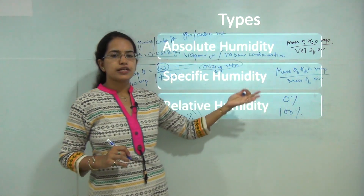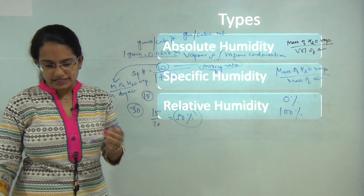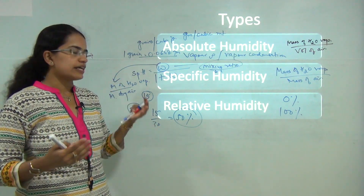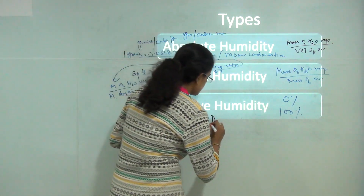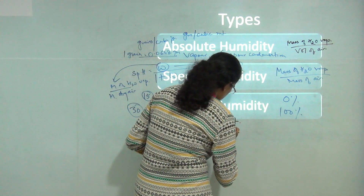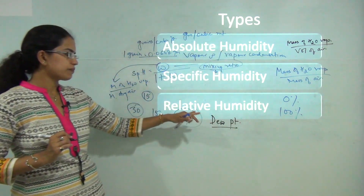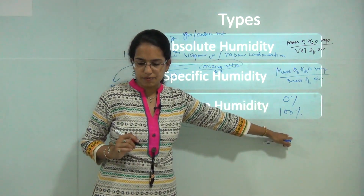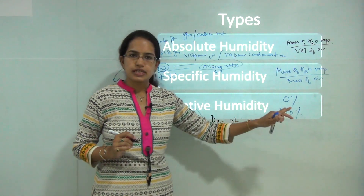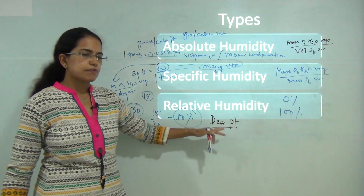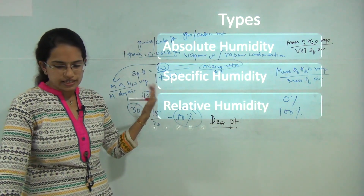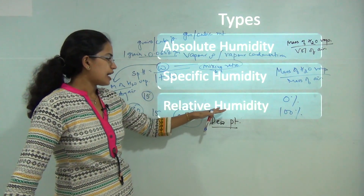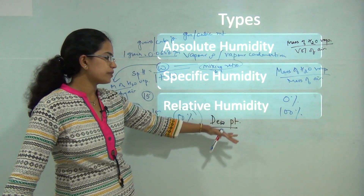Dew point is the point at which water condenses at the ground, and this happens only when the air is fully saturated. Dew point has a good relationship with relative humidity: if relative humidity is 100 percent, the dew point and temperature are the same. If the temperature starts to decrease, condensation occurs and water moves into the liquid state.